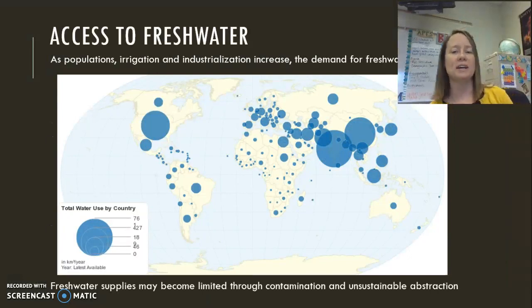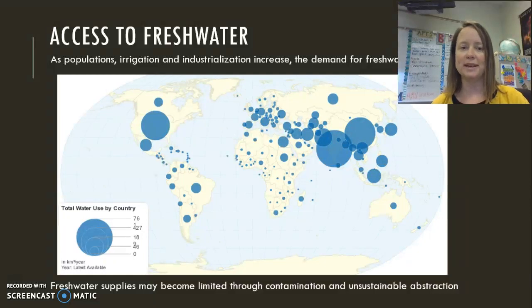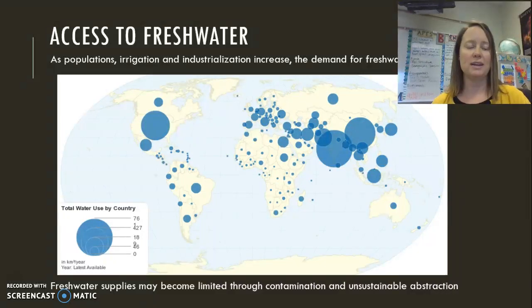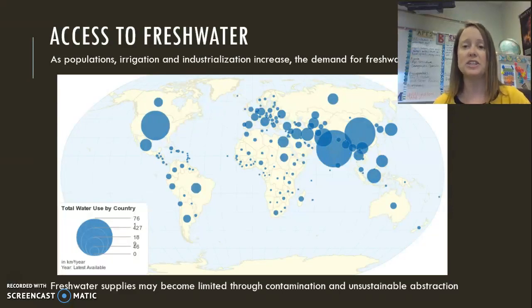In this diagram you can see the total water use by country, represented by circles. China and India, which have the largest populations, have a large demand, which makes sense. However, if you look at the US, we also have a large demand yet we have many fewer people than China and India. As world population has increased, we need more water for irrigation to produce food, and water use in industry has also increased.